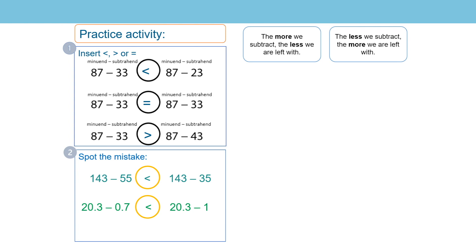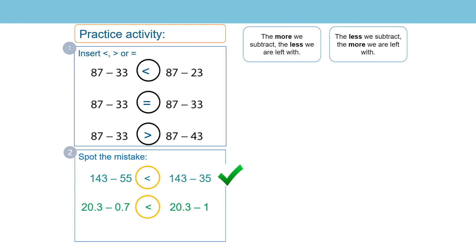Let's look at number two. This time you've got to be the teacher and spot the mistake. Is 143 subtract 55 less than 143 subtract 35? Yes, that's correct because the minuends are the same in the calculations — 143 — but in the calculation on the left, 143 subtract 55, you're subtracting more. And I know that the more we subtract, the less we are left with. So that one's correct.